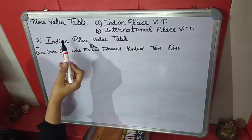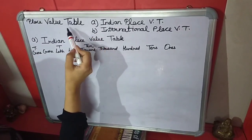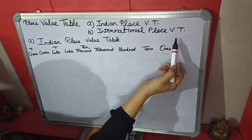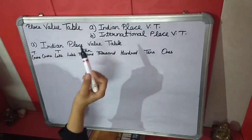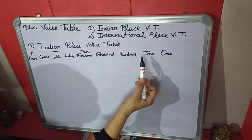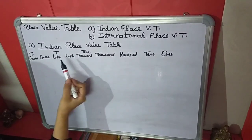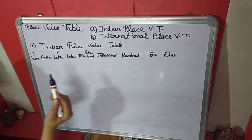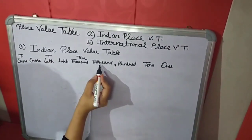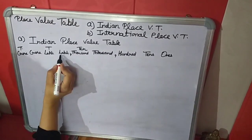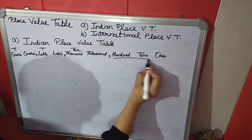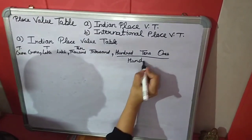You read about the place value table in previous classes also. We will divide the table into two parts: the Indian place value table and the International place value table. Starting with the Indian place value table — this table goes from right to left: Ones, Tens, Hundreds, Thousands, Ten Thousands, Lakhs, Ten Lakhs, Crores, Ten Crores. Before Hundreds we put a comma, before Ten Thousands we put a comma, and before Ten Lakhs we put a comma.